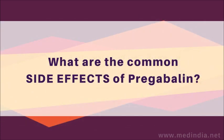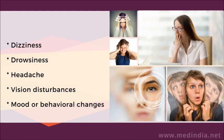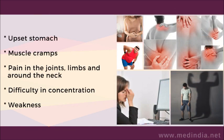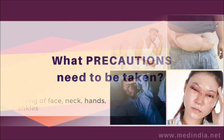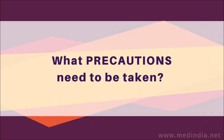What are the common side effects of pregabalin? Dizziness, drowsiness, headache, vision disturbances, mood or behavioral changes, upset stomach, muscle cramps, pain in the joints, limbs, and around the neck, difficulty in concentration, weakness, lack of sexual desire, weight gain, difficulty in sleeping, swelling of face, neck, hands or ankles. What precautions need to be taken?